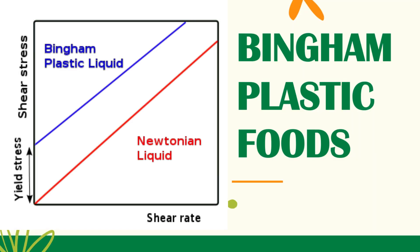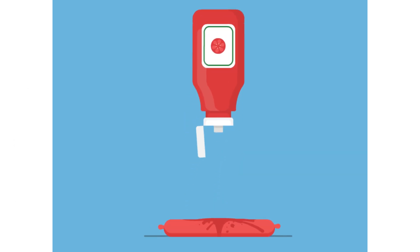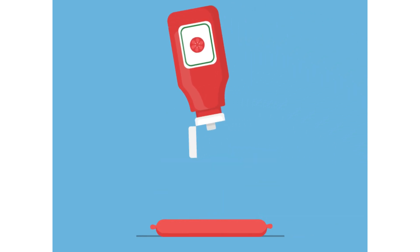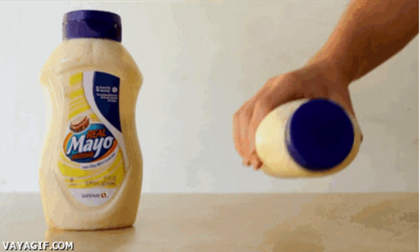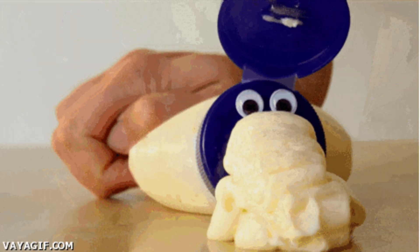Let's focus on Bingham plastic foods. A Bingham plastic fluid is a type of viscoplastic material that exhibits characteristics of both a rigid body and a viscous fluid, depending on the stress applied to it. This material behaves as a solid at low stresses but transitions to flow like a liquid at higher stresses. The defining feature of a Bingham plastic is its yield stress, which is the minimum stress required for the material to start flowing. It remains stationary until the applied stress reaches the yield point, and once this critical stress threshold is surpassed, the material starts to flow with increasing shear stress.